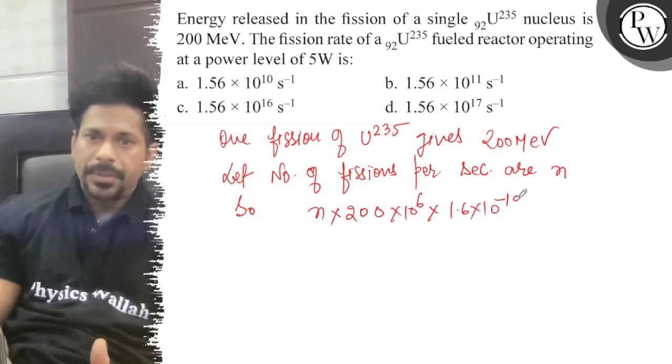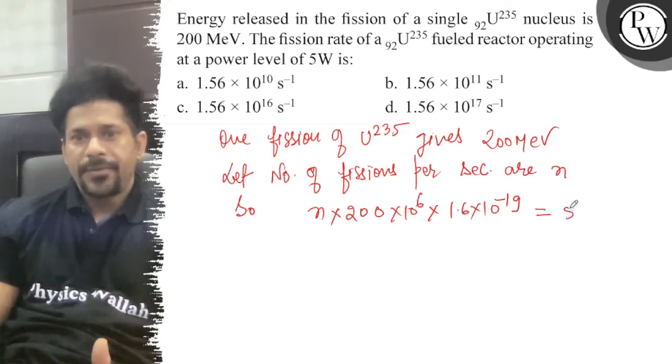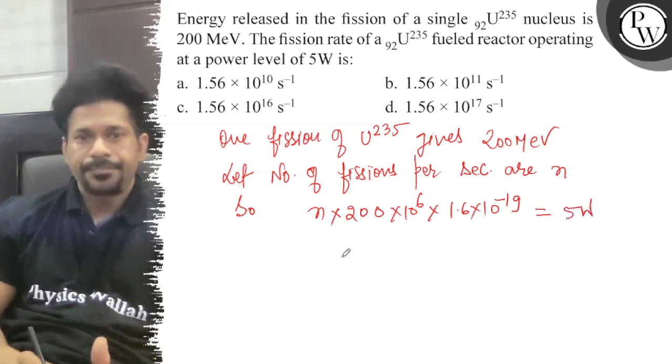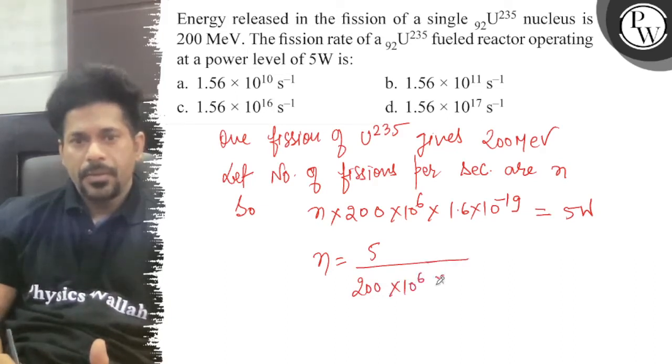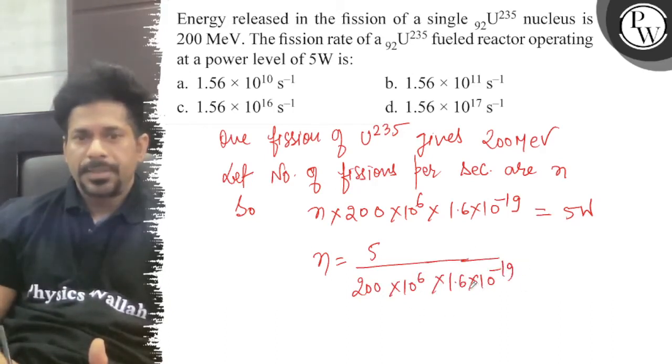now converting to joules, that is power, and that is 5 watts. So n equals 5 divided by 200 times 10 to the power 6 times 1.6 times 10 to the power minus 19.